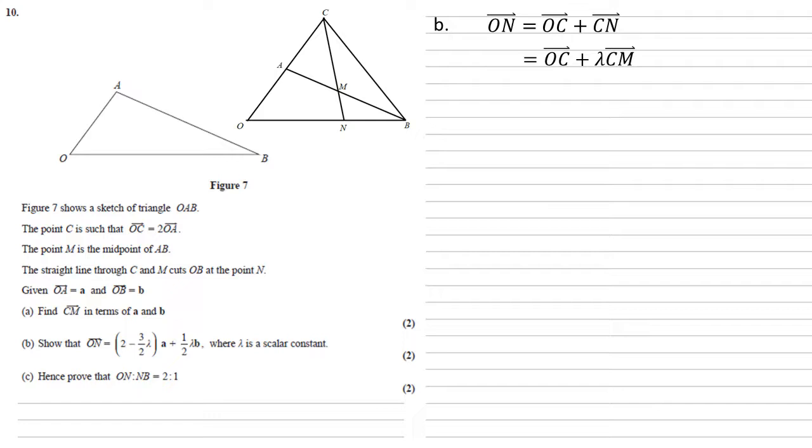Well, CN must be some multiple of CM because M is partway along the line. So CN is just the line CM extended. So we've got OC plus lambda CM. OC is twice OA, so that one's two A. We worked out CM in the last question as minus three over two A plus a half B. So we can put them together. Rearranging this gives us two minus three over two lambda A plus a half lambda B as required.